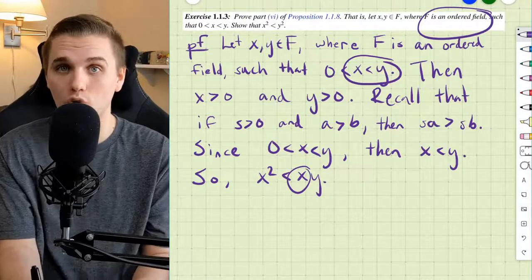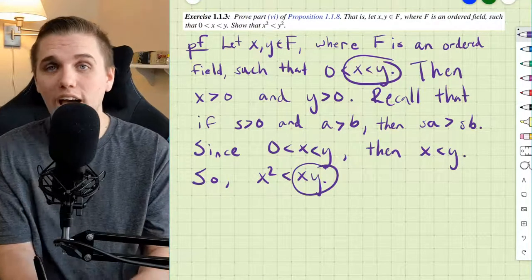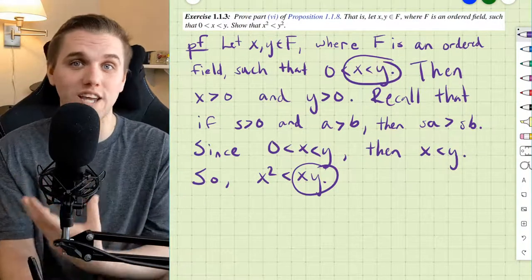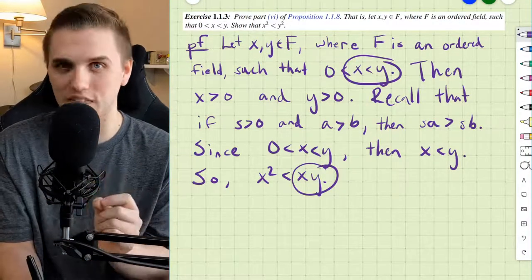Now, because we're working with an ordered field, multiplication has the commutative property, so xy equals y times x. But don't get into the habit of assuming that at this point.